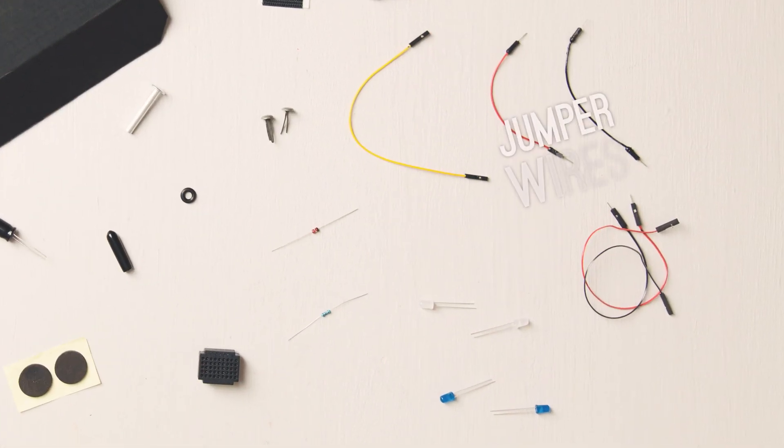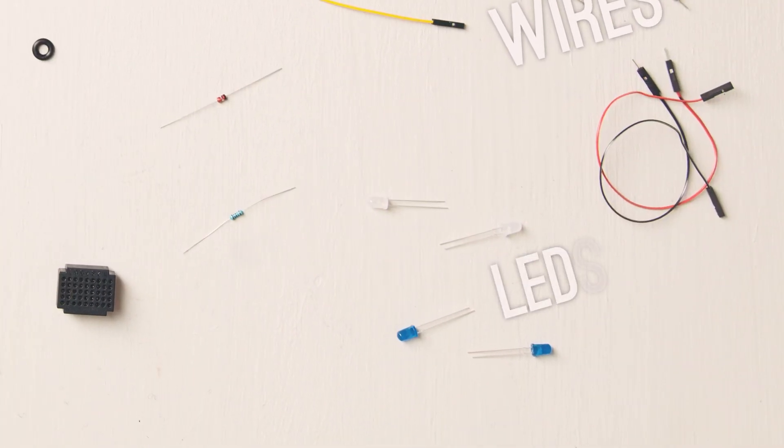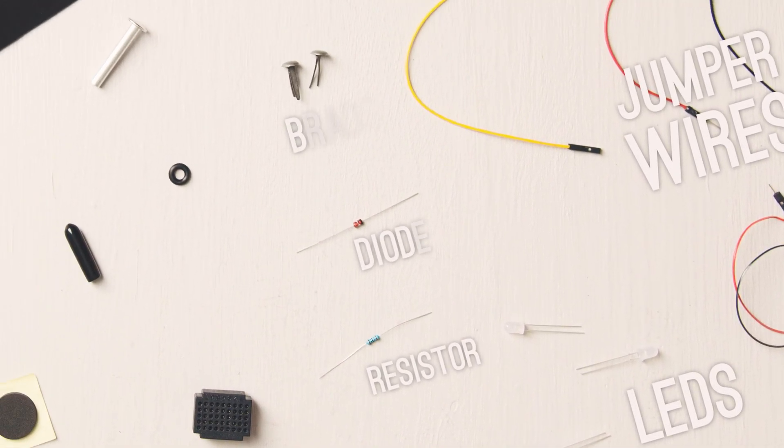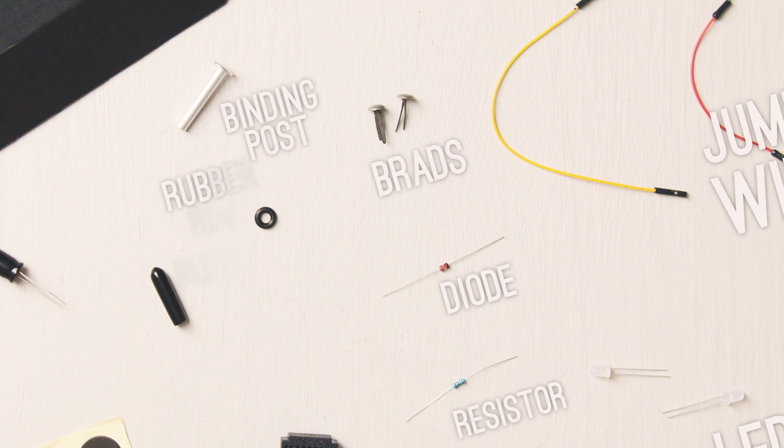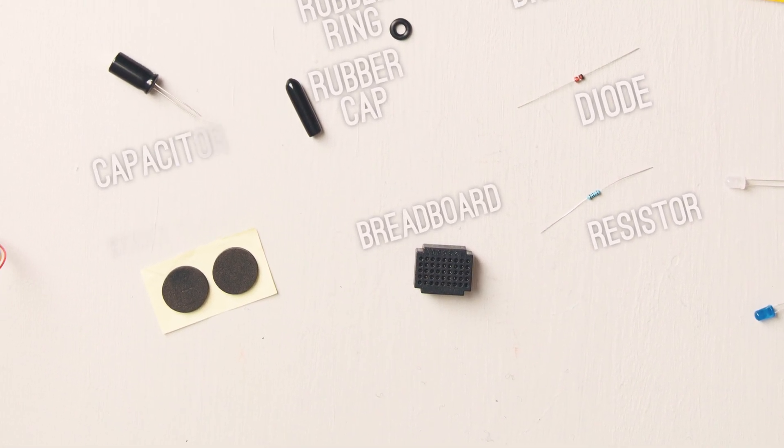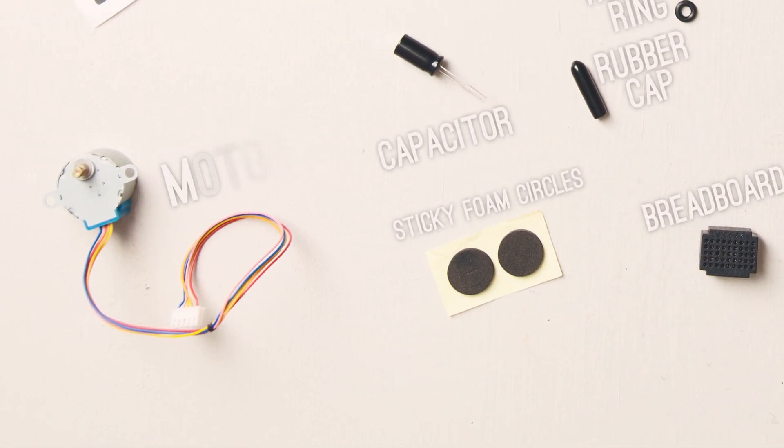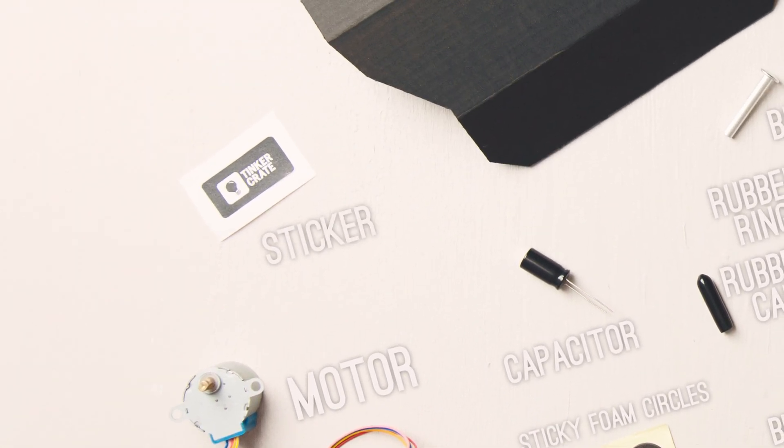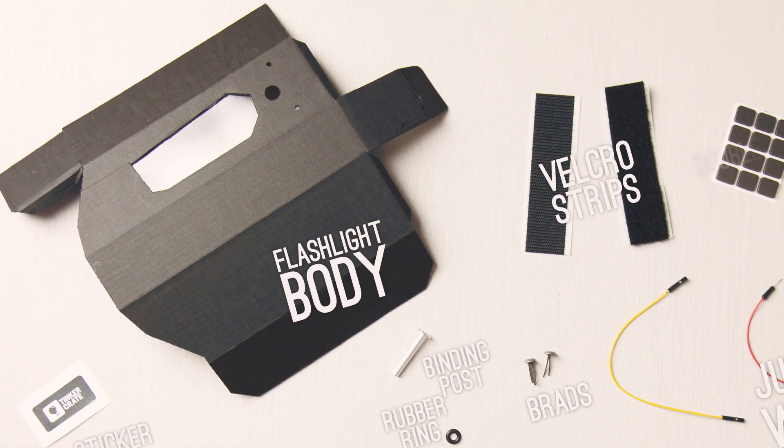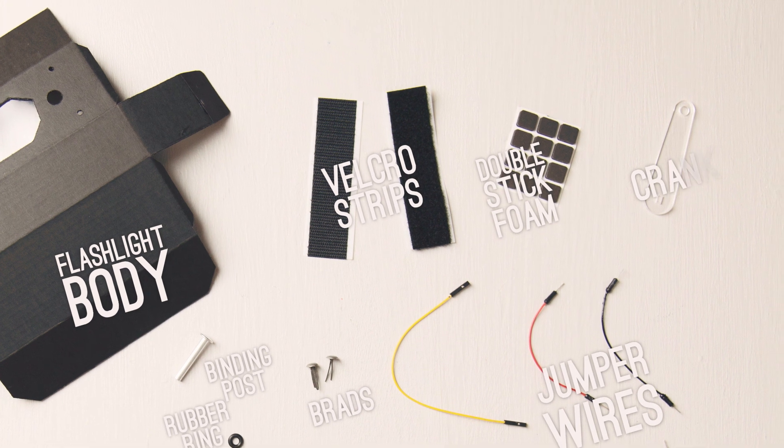In your kit you get a set of jumper wires, white and blue LEDs, a resistor, diode, two brads, binding post, rubber ring and cap, breadboard, capacitor, sticky foam circles, stepper motor, Tinkercrate sticker, flashlight body, velcro strips, double stick foam, and acrylic crank.